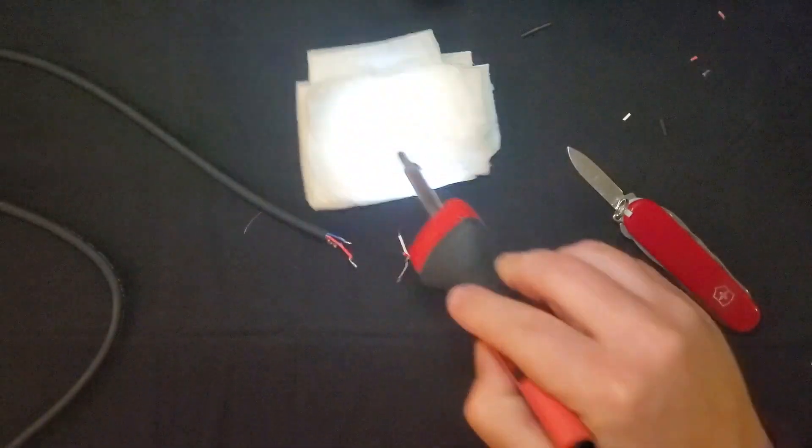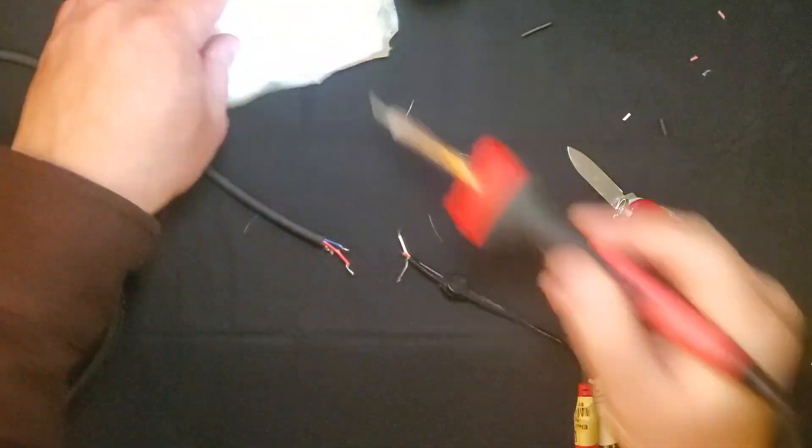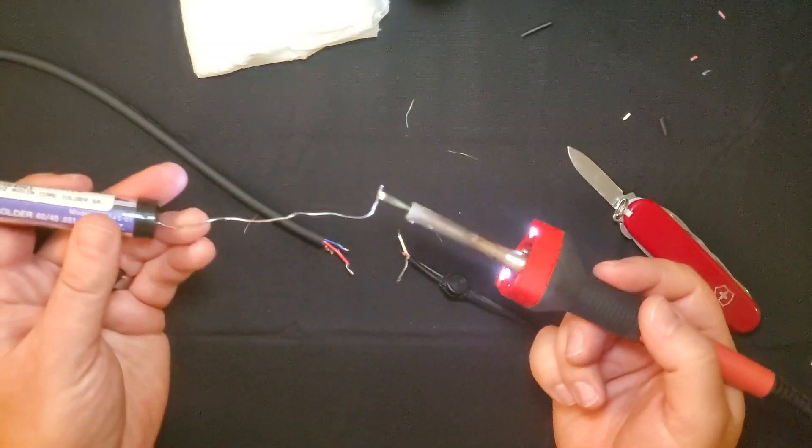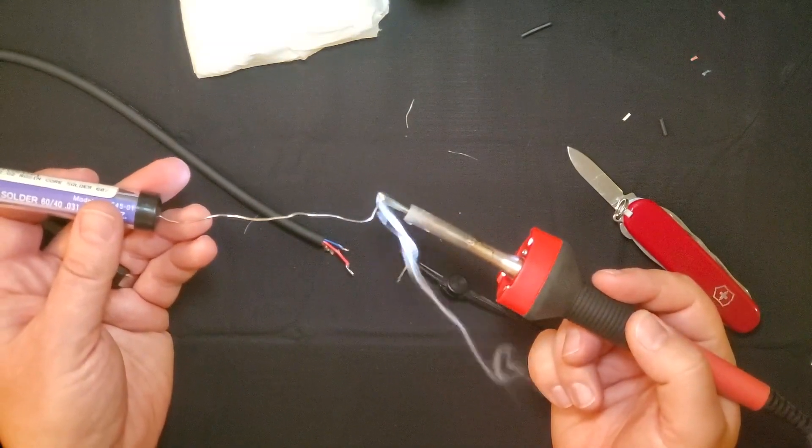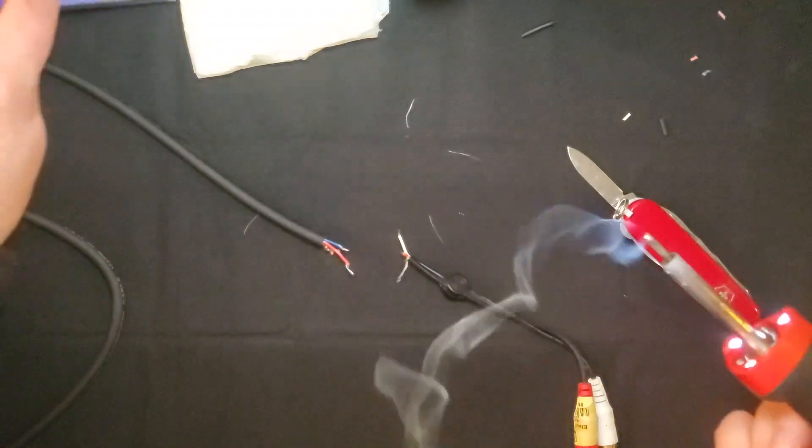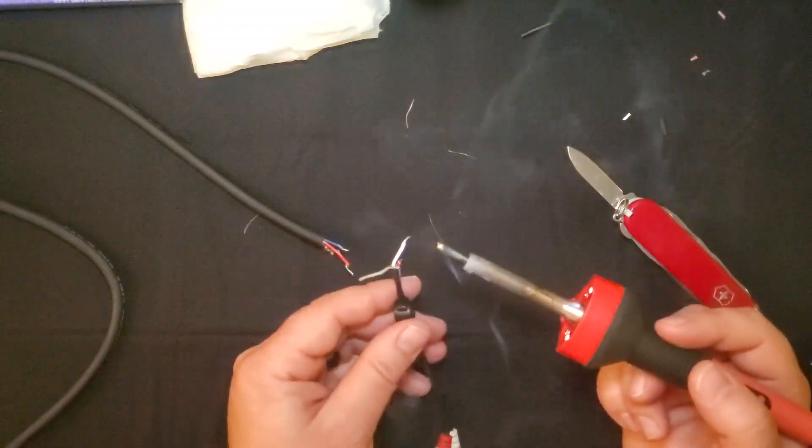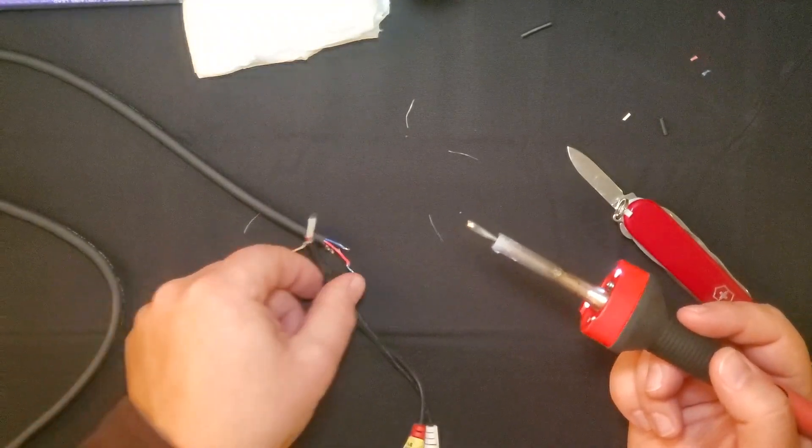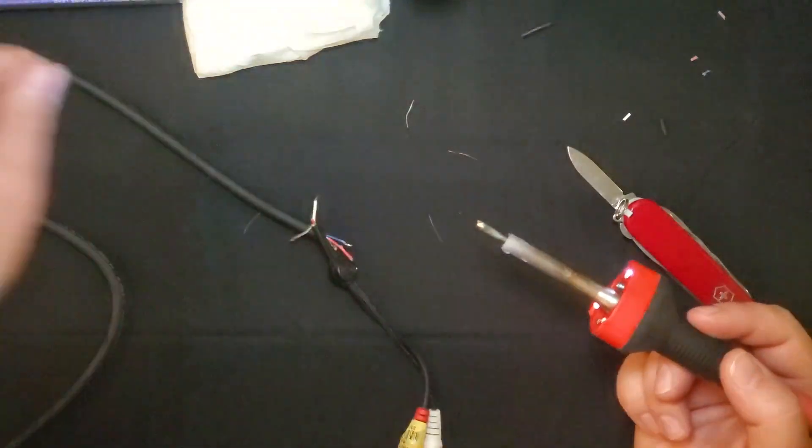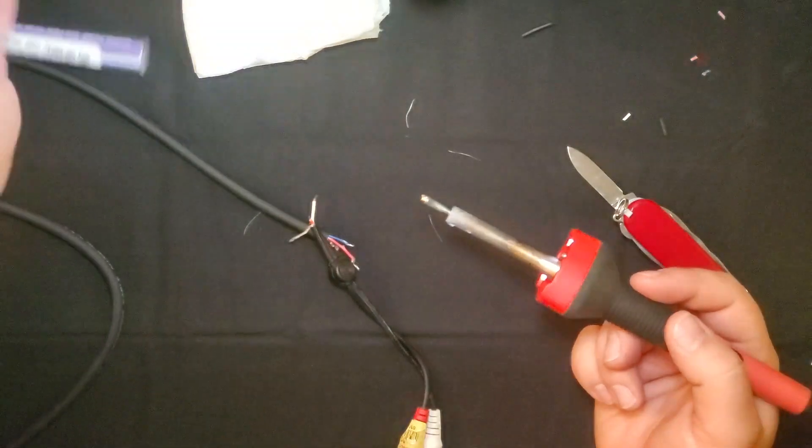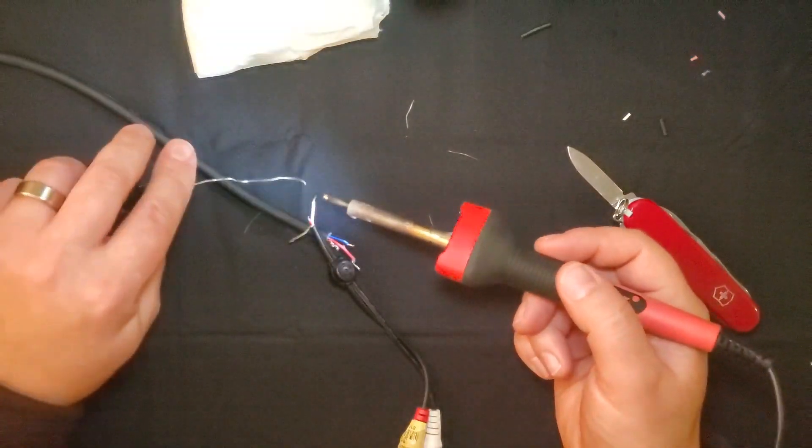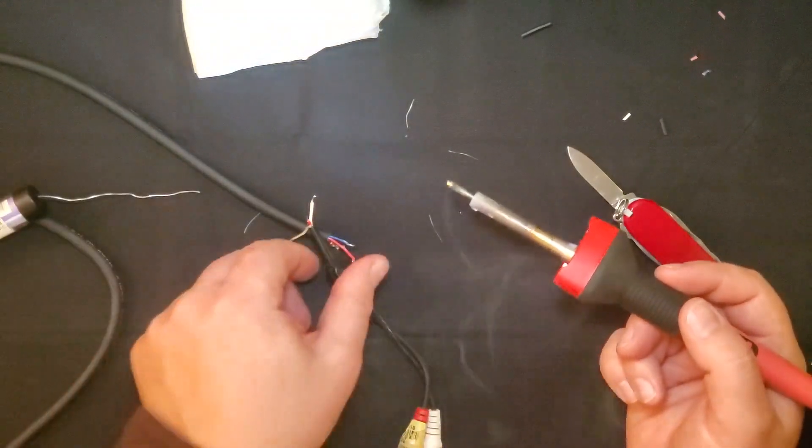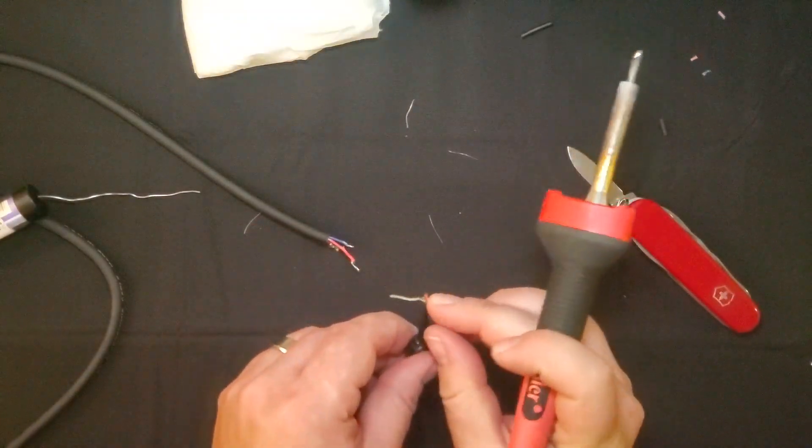The soldering iron is hot at this point so I'm wiping it on the paper towel just to remove any old solder from the end. And now I'm just going to tin it with some fresh solder. The next step is to apply solder to all of the exposed parts of these wires, almost as though I was using glue to stick two surfaces together whereby you need to apply the glue to both surfaces before bringing them together.